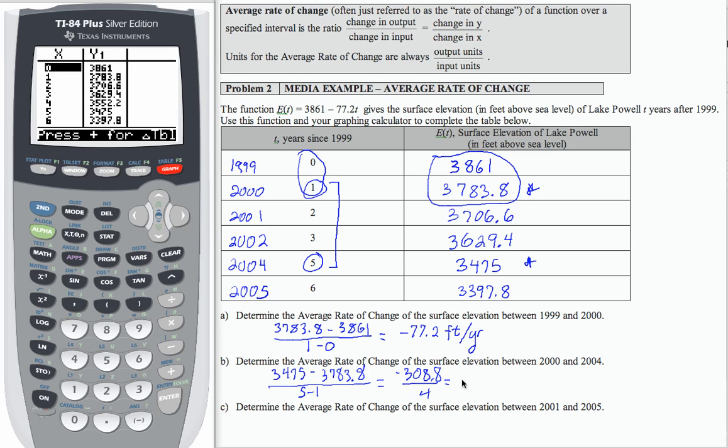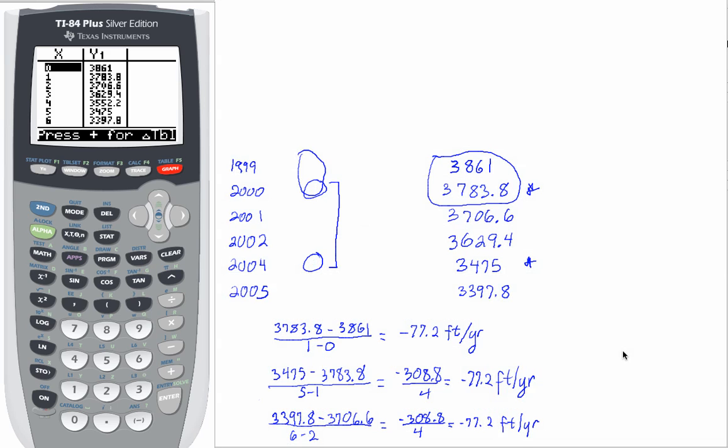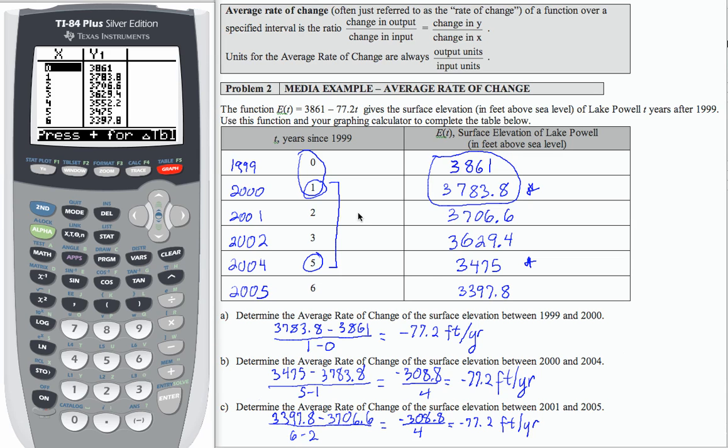And for part C, to determine the average rate of change between 2001 and 2005. 2001 is here, 2005 is here. So I'm using these values: 3,397.8 minus 3,706.6 over 6 minus 2. We get the same thing and end up with negative 77.2 feet per year. Thank you.